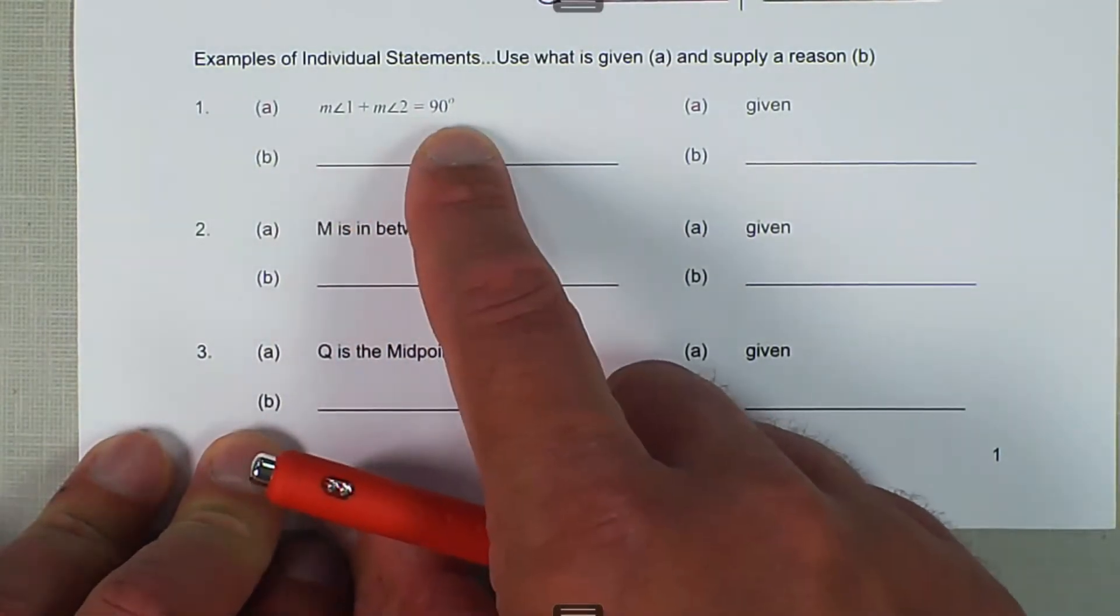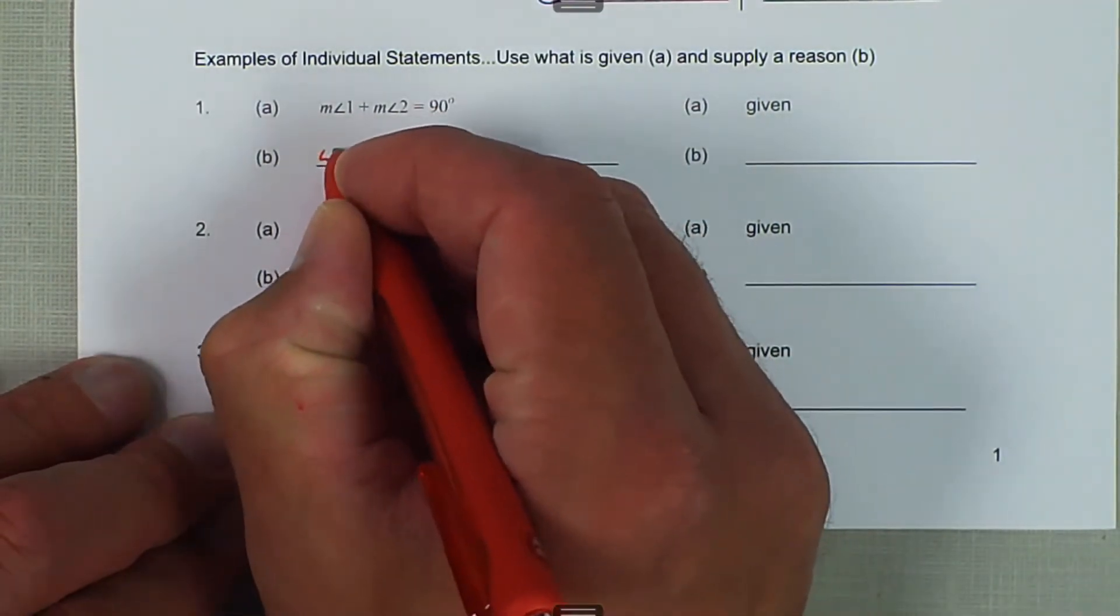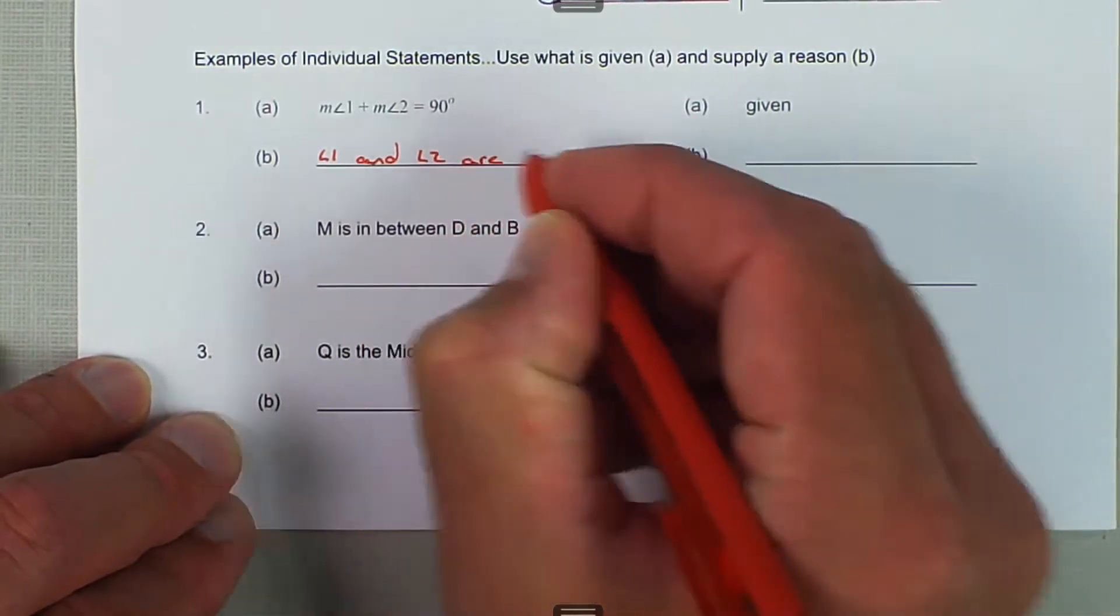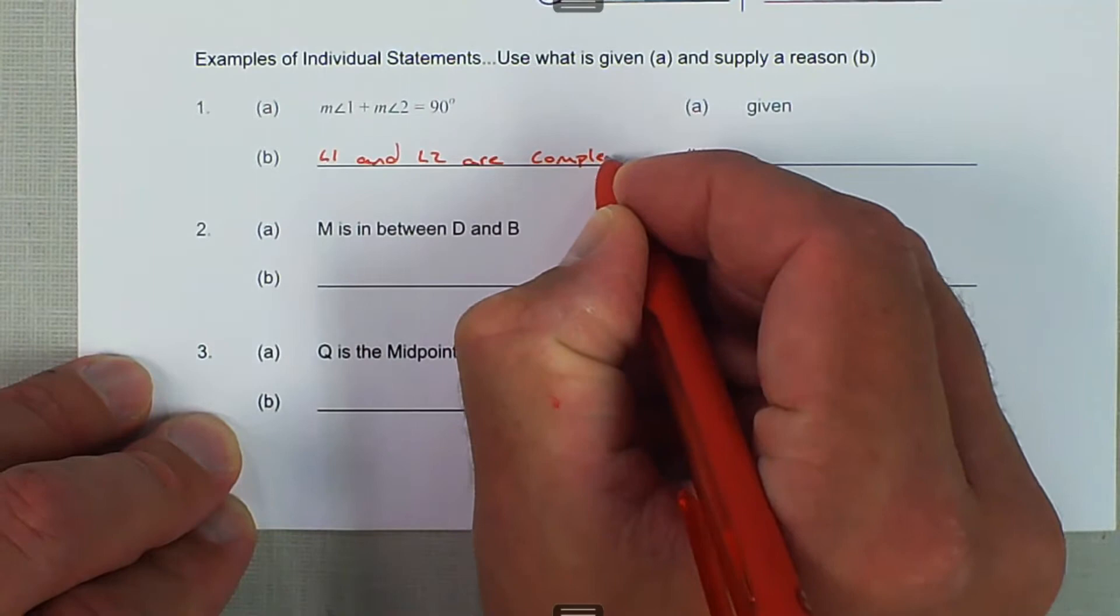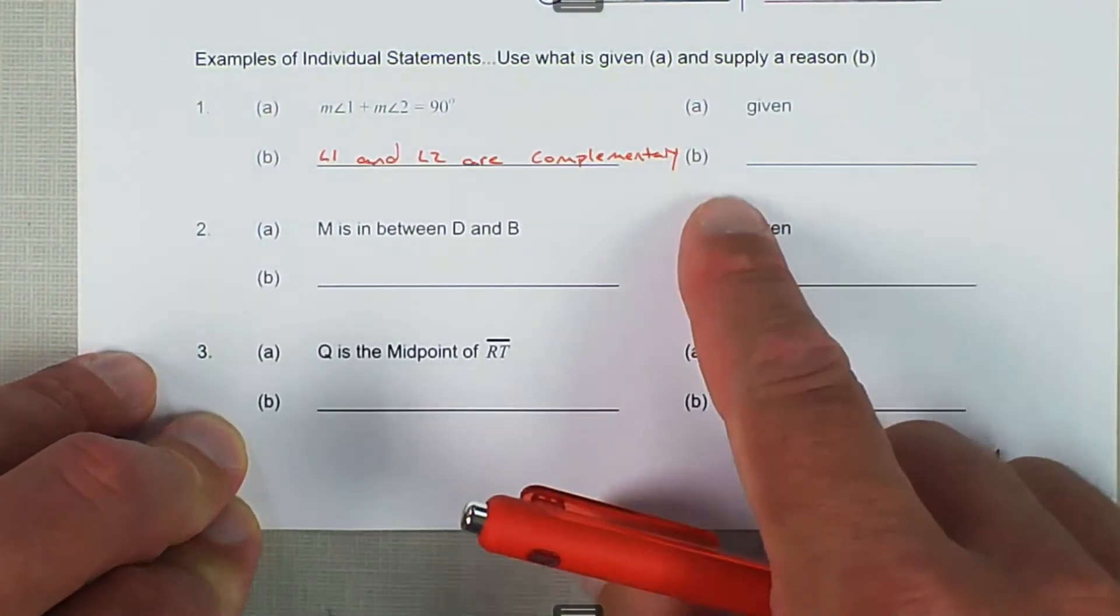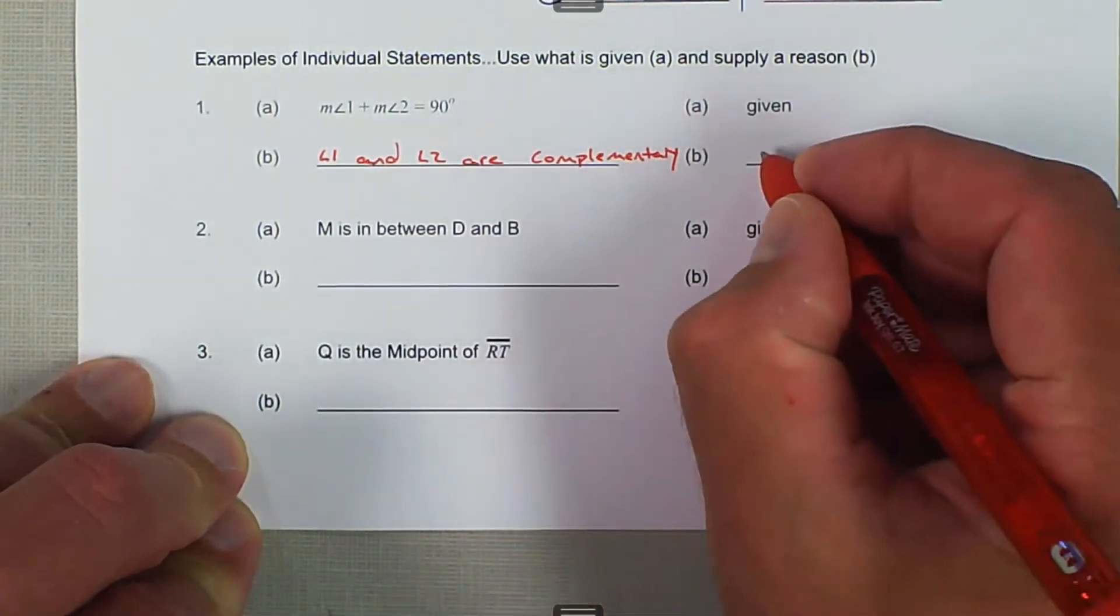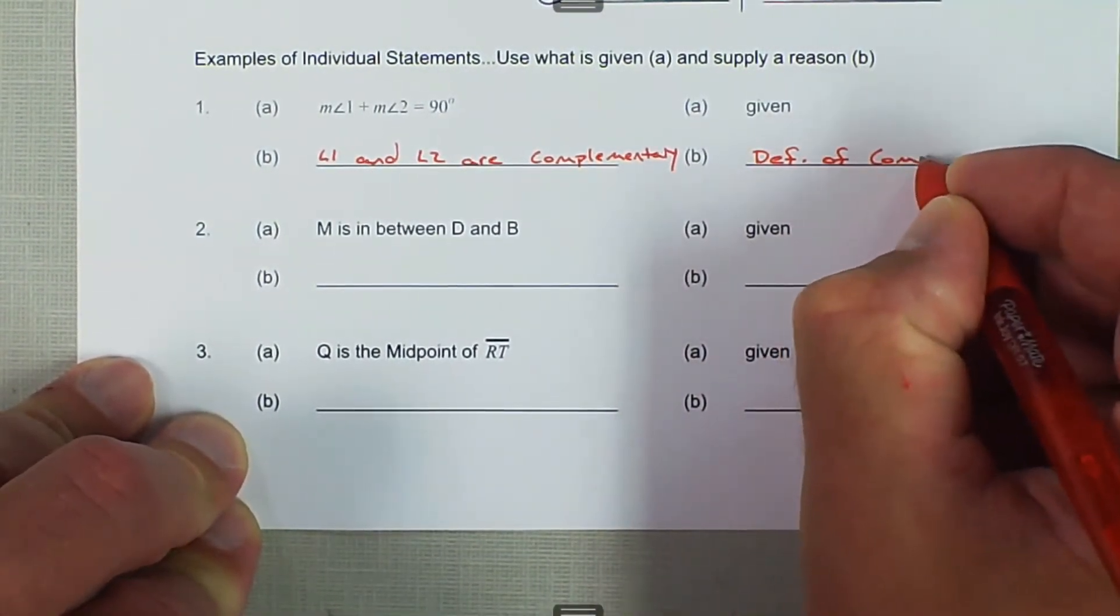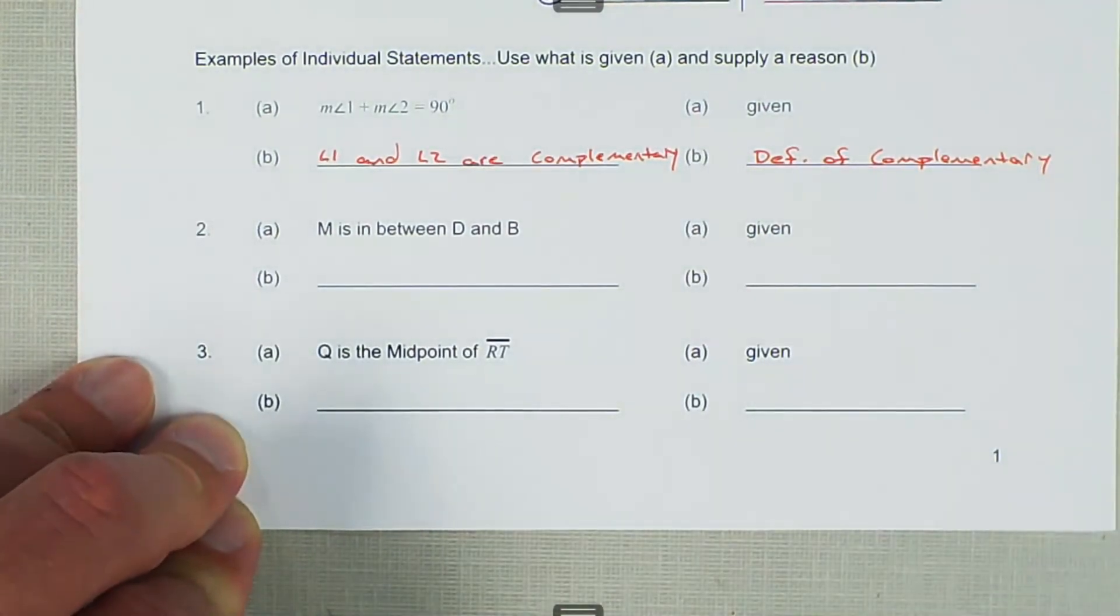So what we could say in this case is angle 1 and angle 2 are complementary angles. And the reason that we would put here is because of the definition of complementary angles.